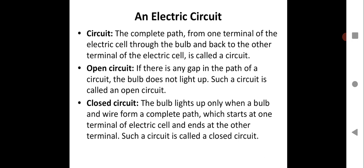In a closed circuit, the bulb lights up only when the bulb and wire form a complete path. Any gap or loose connection leads to an open circuit, making the path incomplete. In a closed circuit, the electric current has a complete flow through the circuit, the bulb glows, starting from one terminal of the electric cell and returning to the other terminal. Such a circuit is called a closed circuit. Please write these points in your notebook.